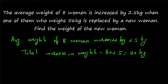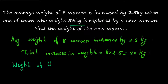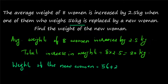There is a 20 kg increase in weight when a woman is replaced by another woman. The woman weighing 56 kg is replaced by a woman with 20 kg more. So the weight of the new woman will be equal to 56 plus 20, which is 76 kg.